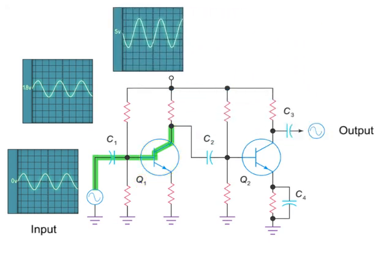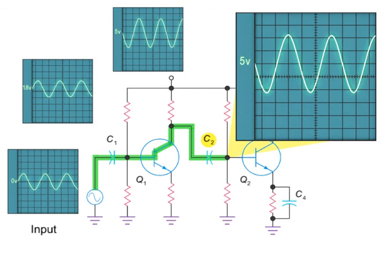Before reaching the second transistor, the signal passes through another coupling capacitor, C2, which also strips away the DC voltage.